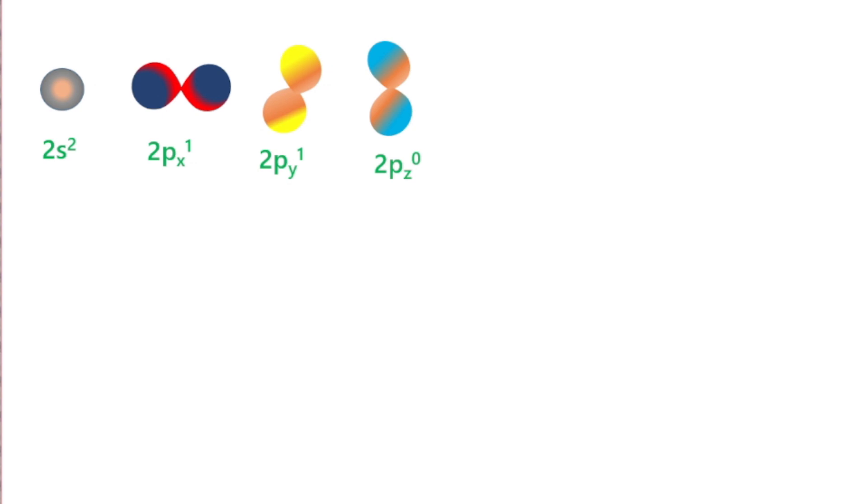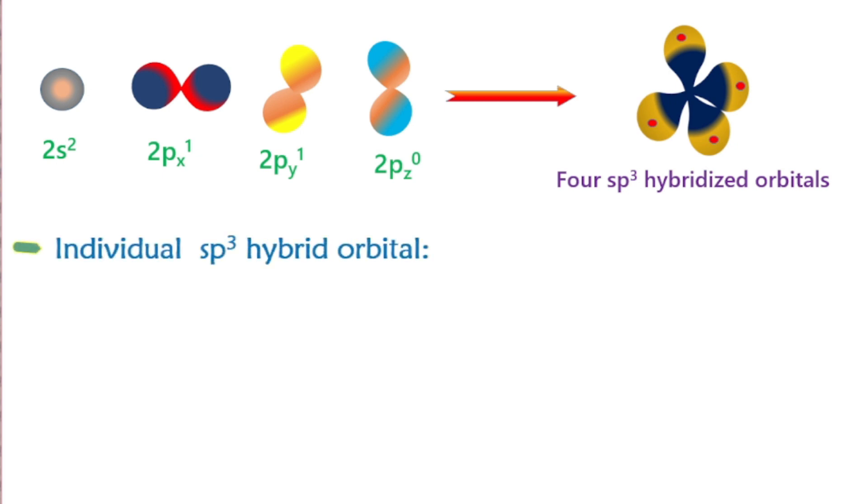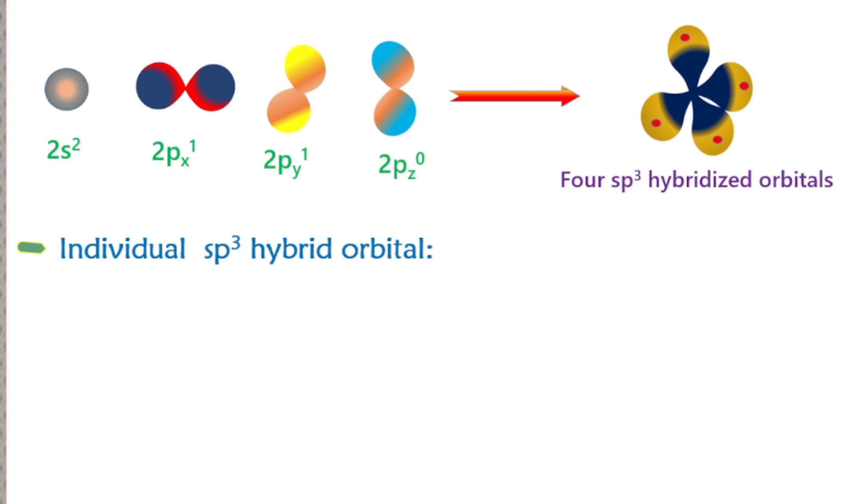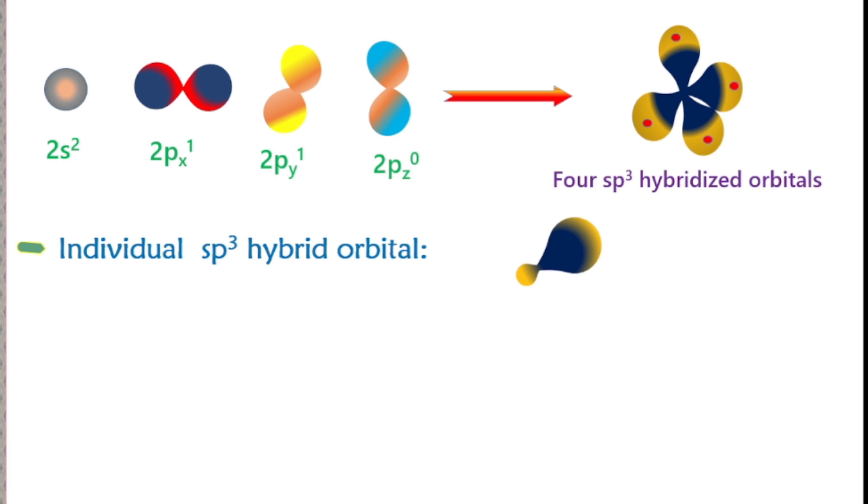Schematically we can understand this as: When four valence orbitals are combined, we have four hybrid orbitals, four sp3 hybridized orbitals, which have the same energy and shape. Each individual sp3 hybrid orbital has two lobes, one small lobe and one bigger lobe.